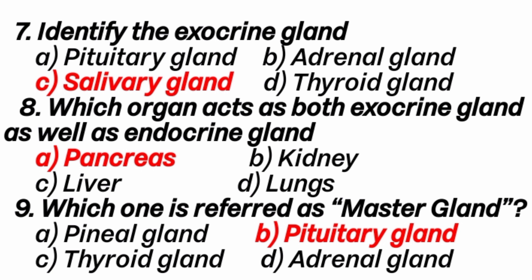That is the secretion of hormones. 8th question: which organ acts as both exocrine and endocrine gland? Answer is A option: pancreas. Pancreas is a dual gland because it secretes both enzymes and hormones. 9th question: which one is referred to as master gland? Answer is B option: pituitary gland.